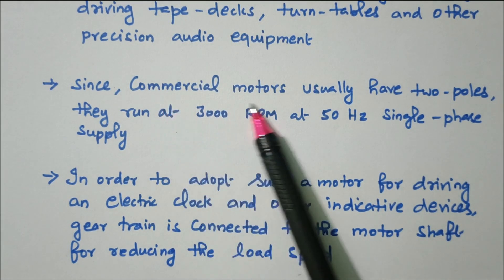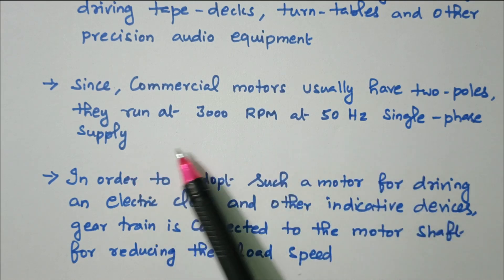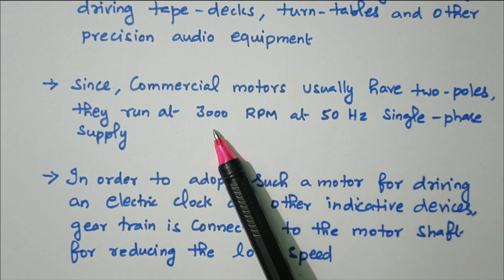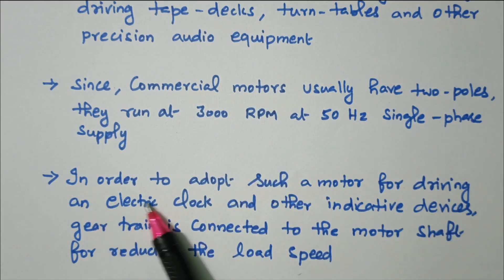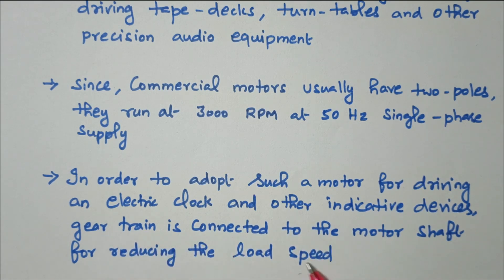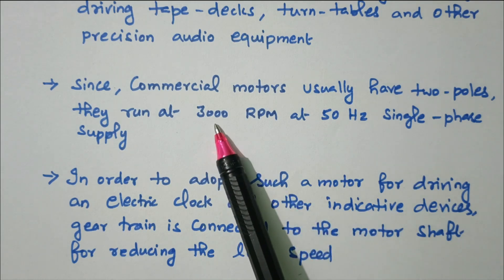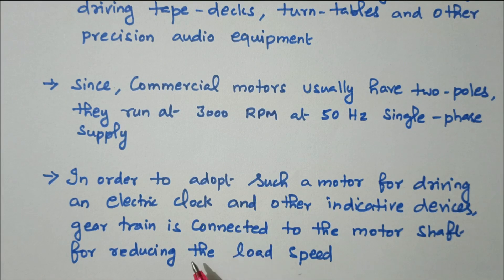Since commercial motors usually have two poles, they run at 3000 RPM at 50 Hz single-phase supply. In order to use such a motor for driving an electric clock and other indicative devices, a gear train is connected to the motor shaft for reducing the load speed. By using the gear system, we can control the speed.